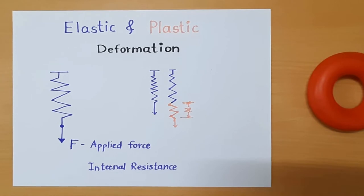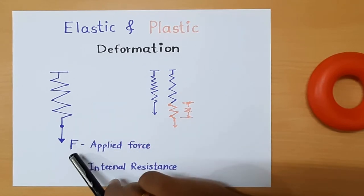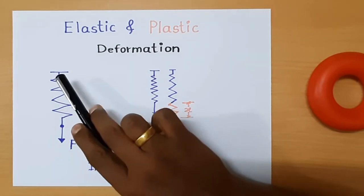So what is elastic and plastic deformation? This plays an important role in FEA analysis. We will start with the example. Let's take the example of a spring.